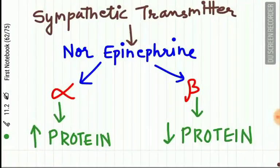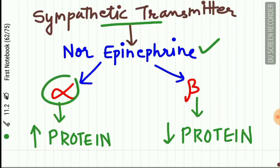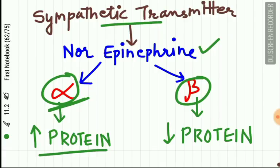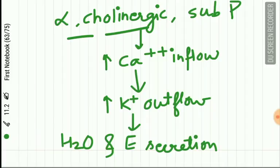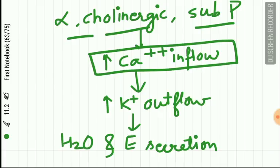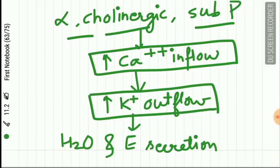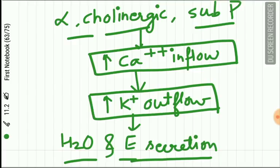The sympathetic neurotransmitter is norepinephrine, which acts on alpha-adrenergic and beta-adrenergic receptors. Stimulation of alpha-adrenergic receptors increases protein secretion in saliva, while beta-adrenergic receptor stimulation decreases protein content. Alpha-adrenergic, cholinergic, and substance P receptors cause increased inflow of calcium in acinar cells, which causes increased outflow of potassium, producing watery saliva rich in electrolytes.